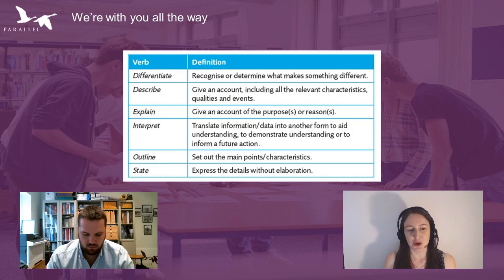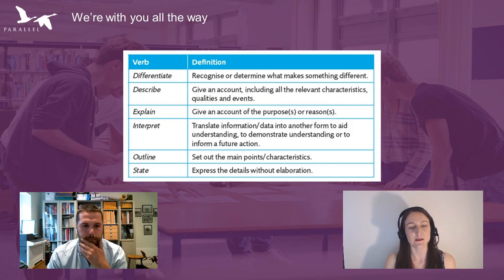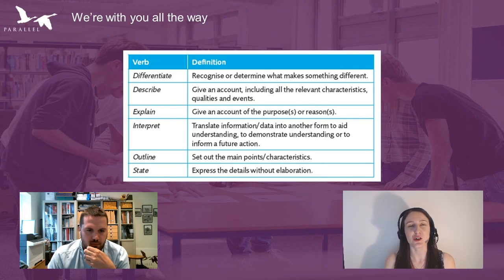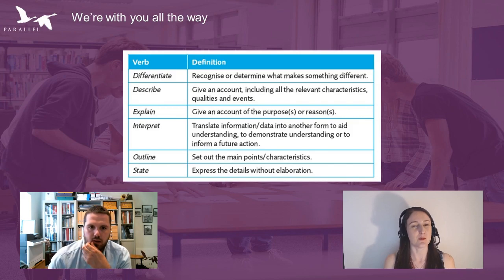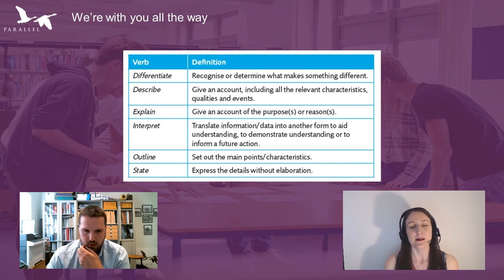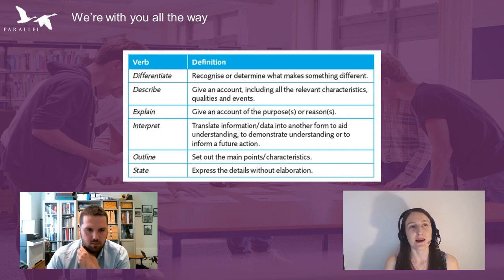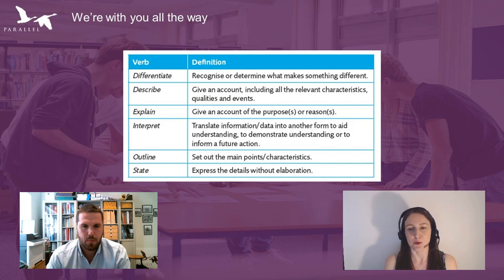Previously there was just the state part — these are quite short, sharp answers. State means express details without elaboration. A good example: 'state sources of conflict in a project' — you need to say what the conflict is and who it's between, not an essay. Outline is about outlining steps in a process — just key points on an outline question.